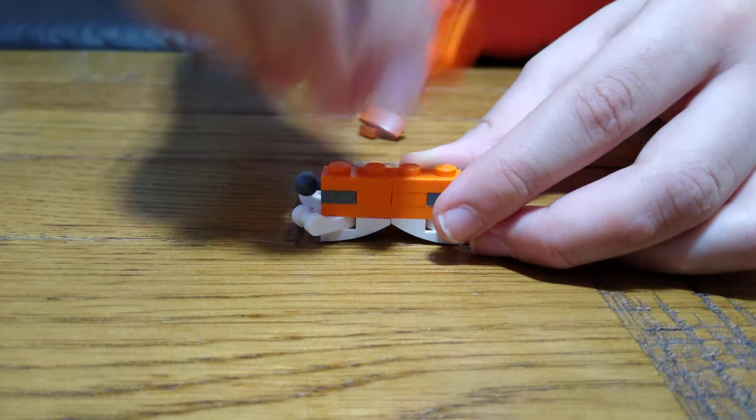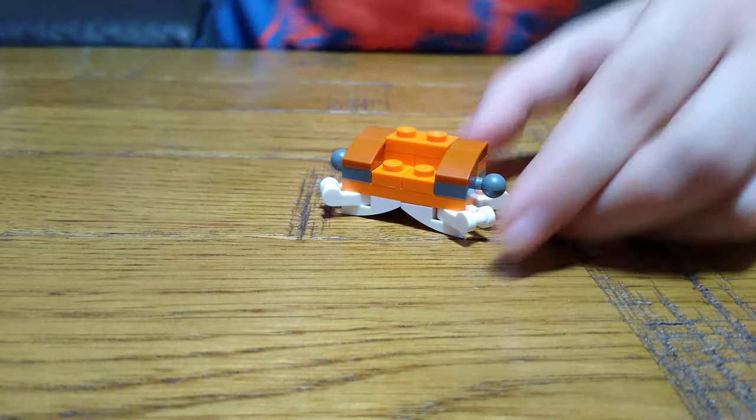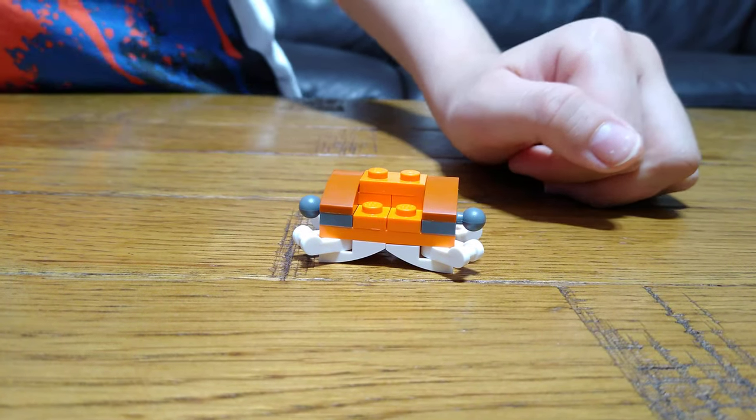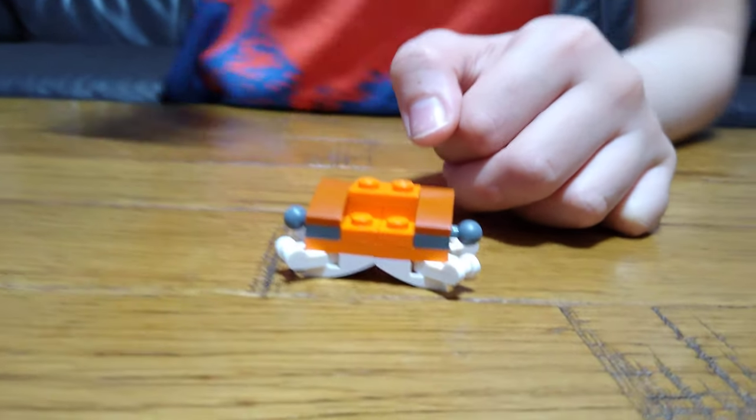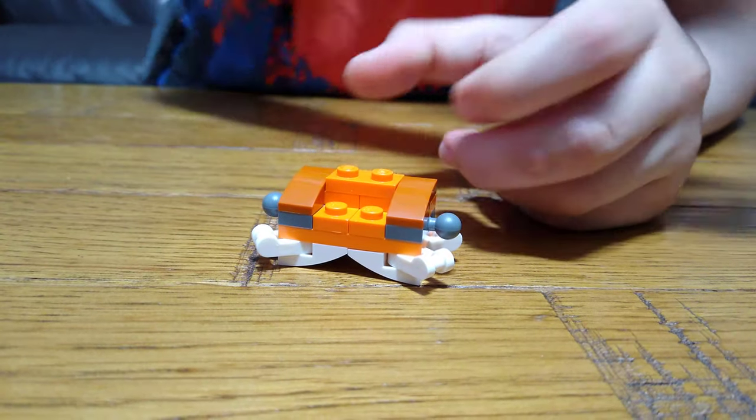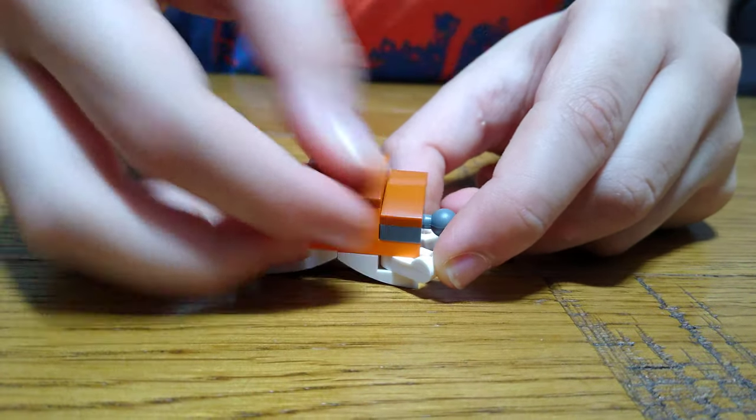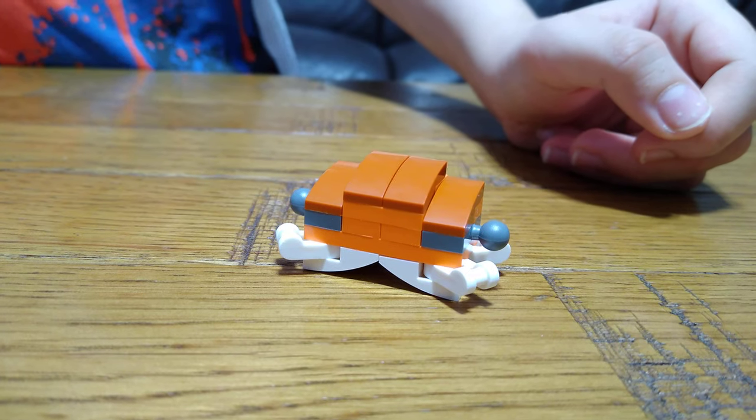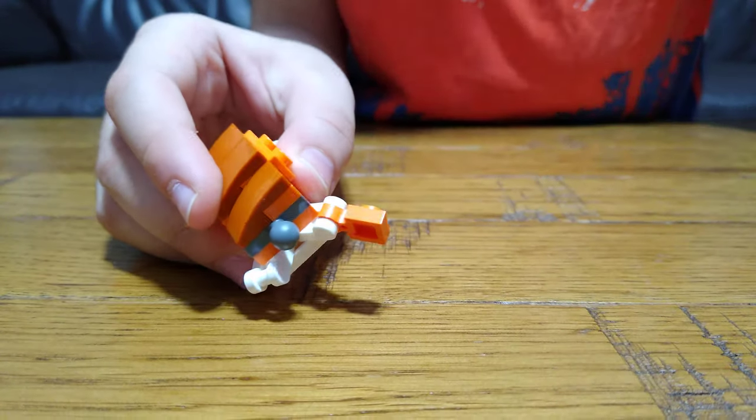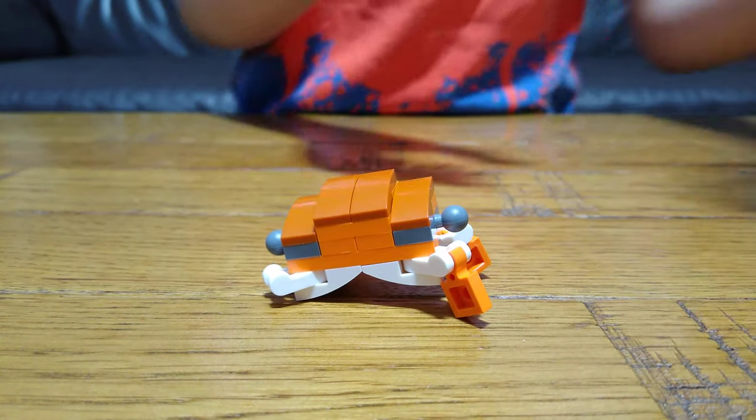One of these, two of these, and then you also place one over here like that and get two of these again like that. And then get four of these like that for the legs of the crab.